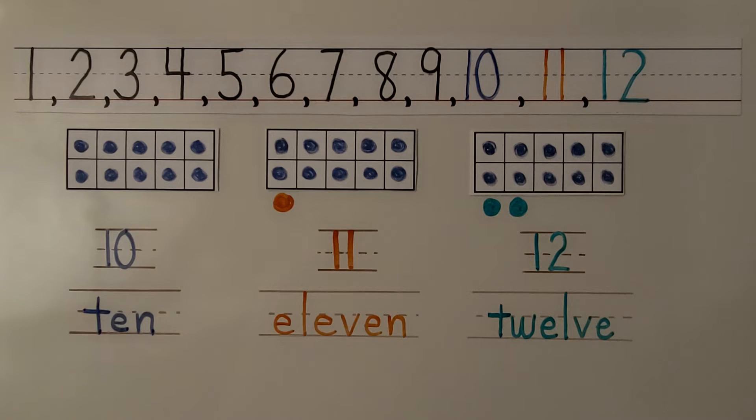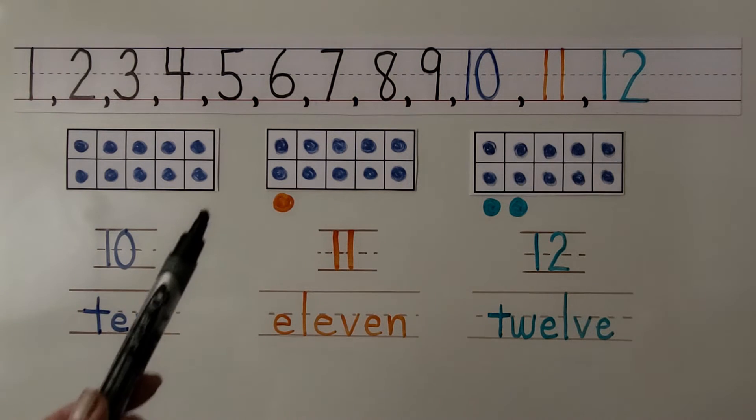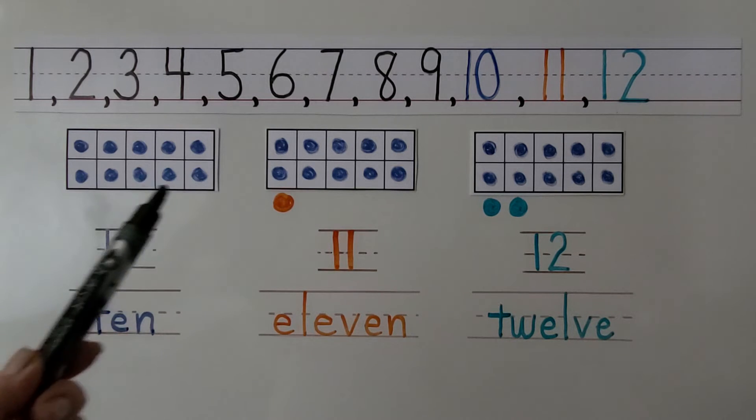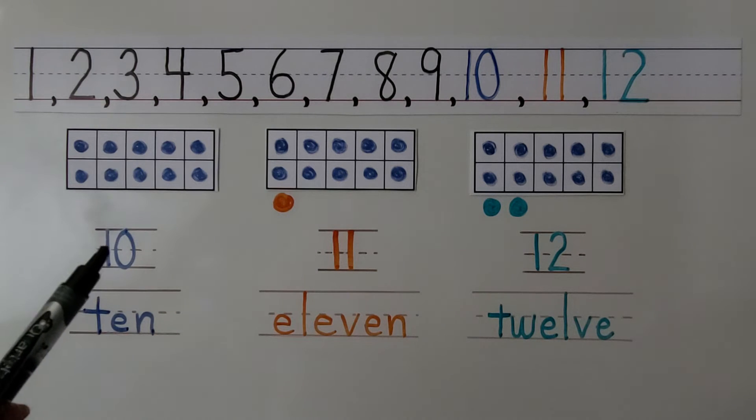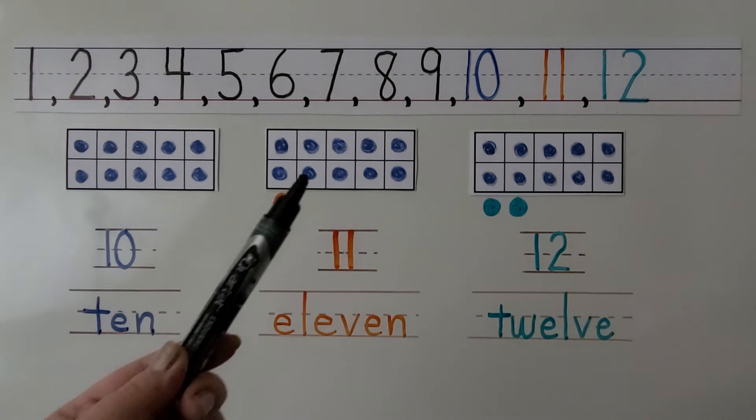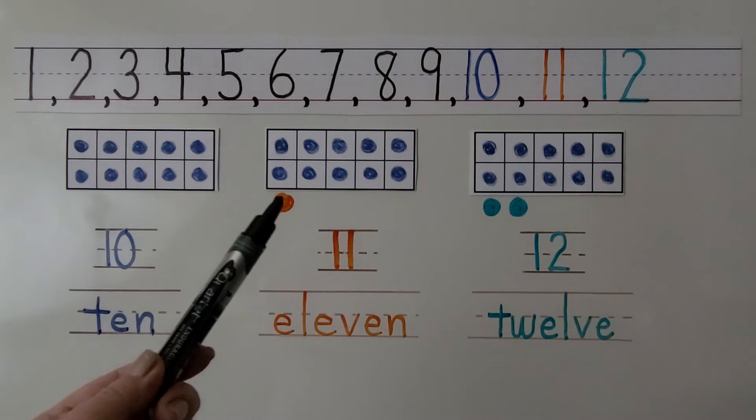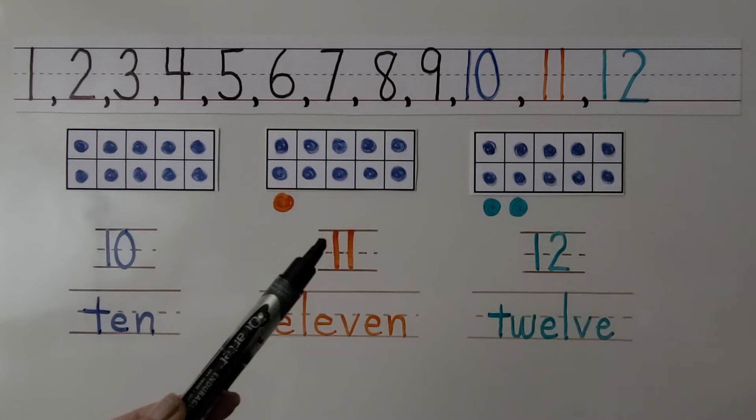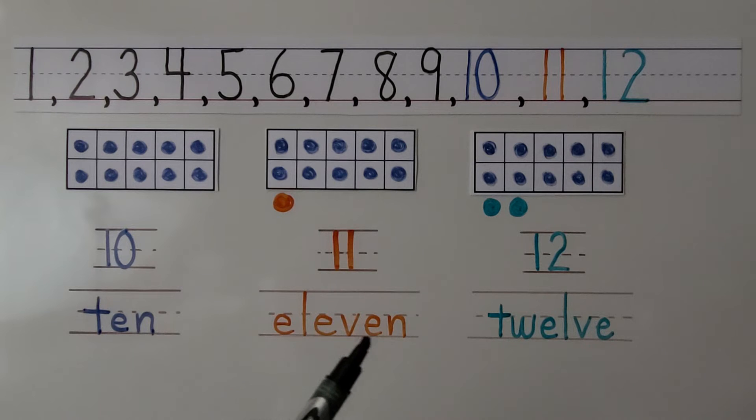We can show 11 by placing one counter underneath a full ten frame. Here we have a full ten frame showing 10. Here's the word ten. Here we have a full ten frame with one counter under it, showing 10 and one more. That's 11. Here's the word 11, E-L-E-V-E-N.